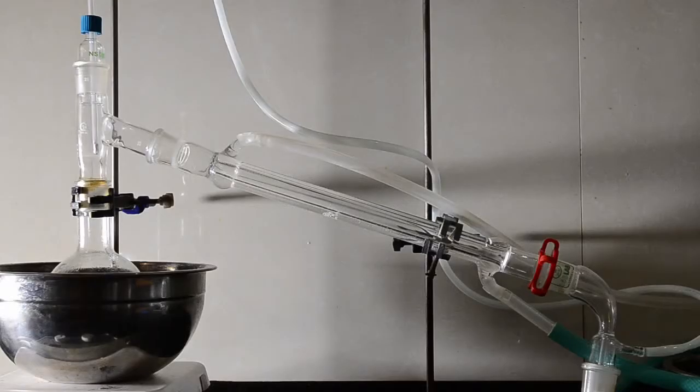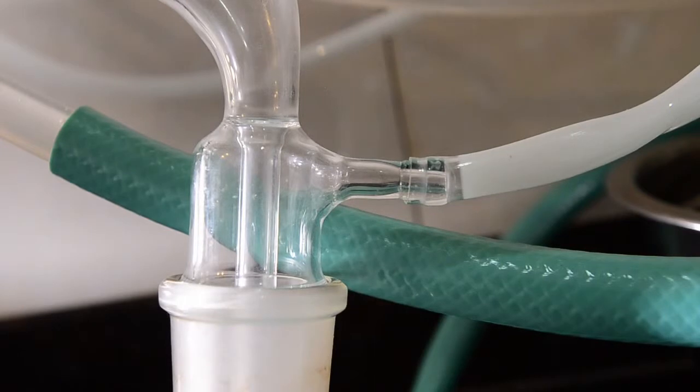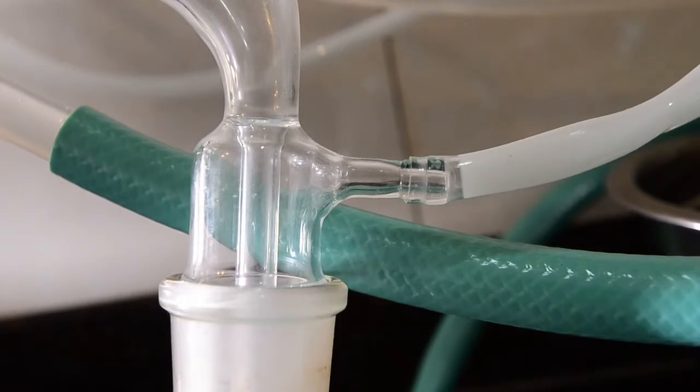Now set up the flask for simple distillation using cool water and a thermometer to monitor the temperature of the distillate vapors. We really recommend using a hose attached to a suitable receiving adapter, which can safely vent away HCl gas.